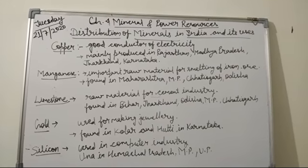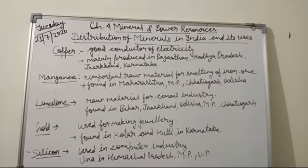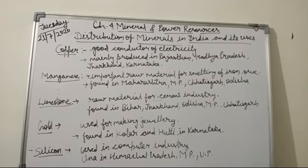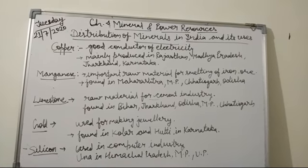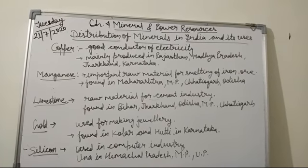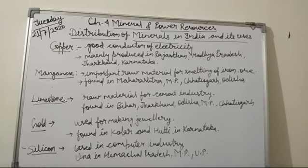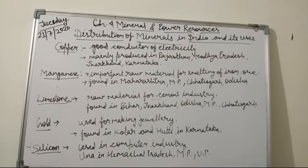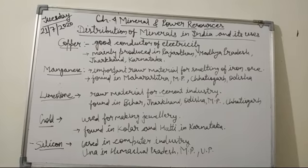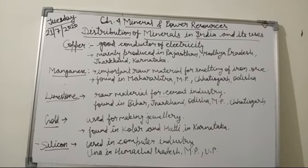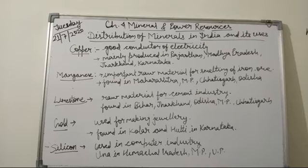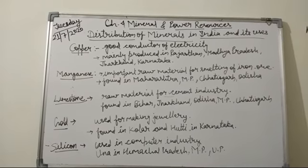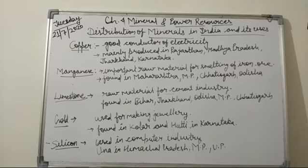The next mineral is salt. It is used by the food industry as a preservative and by many chemical industries. Common salt is used by every household to make food tasty, and it is obtained from seas, lakes and rocks. India is one of the world's leading producers and exporters of salt. Gujarat and Tuticorin are rich sources of salt.